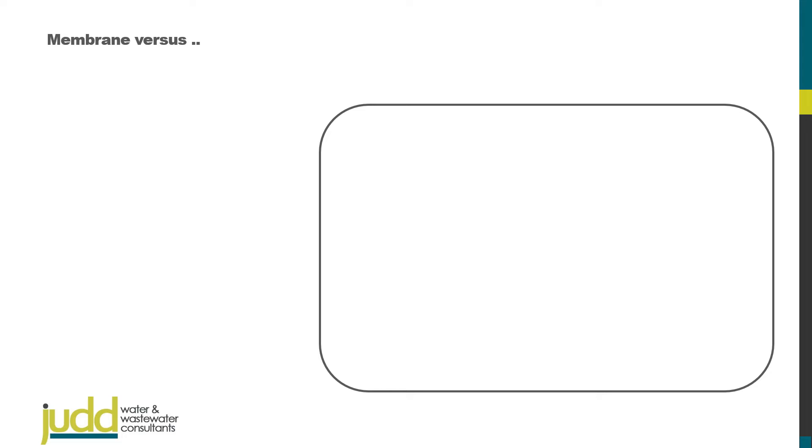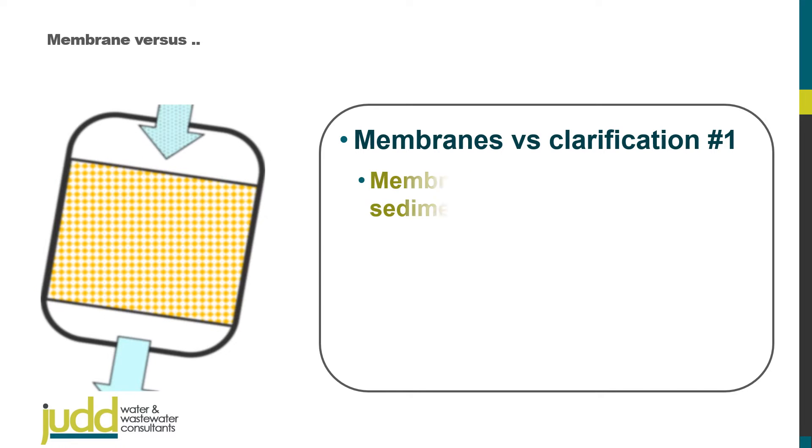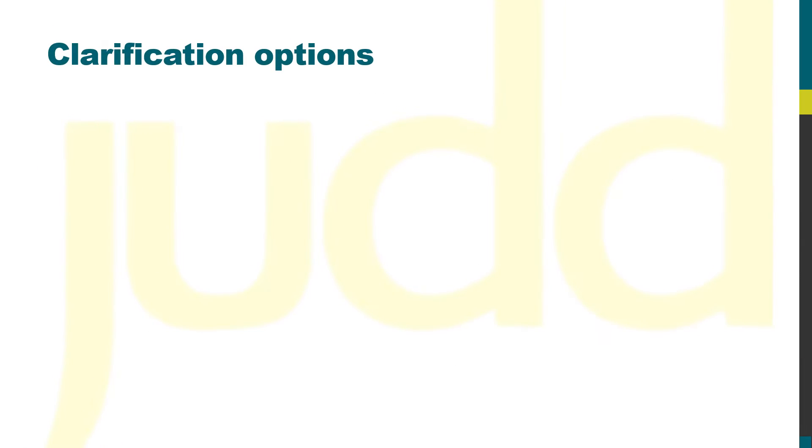This video is part of the membrane versus series. This one introduces the different clarification processes and their fundamental characteristics. The classical clarification processes can be categorized as gravitation and filtration, where gravitation of the suspended matter can either be by sedimentation or flotation.